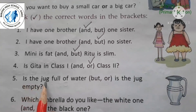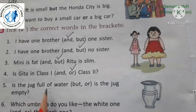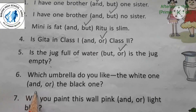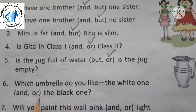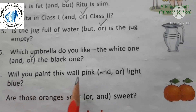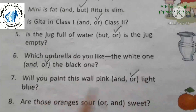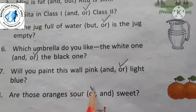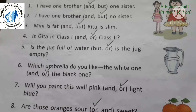Fifth: 'Is the jug full of water or is the jug empty?' Sixth: 'Which umbrella do you like — the white one or the black one?' Again a choice, so 'or'. Seventh: 'Will you paint this wall pink or light blue?' Again 'or' — choice. Eighth: 'Are those oranges sour or sweet?' Again options. So at all these places we write 'or' because choices are given.